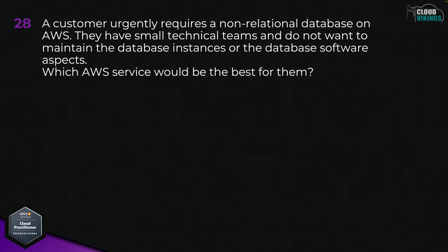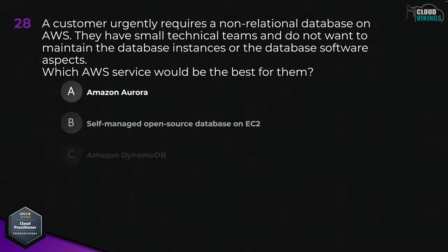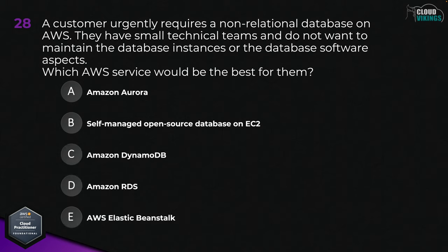Question twenty-eight: a customer urgently requires a non-relational database on AWS. They have a small technical team and do not want to maintain the database instances or the database software. Which AWS service would be the best fit? Options are: A, Amazon Aurora; B, self-managed open source database on EC2; C, Amazon DynamoDB; D, Amazon RDS; or E, AWS Elastic Beanstalk. The best answer here would be C, Amazon DynamoDB.